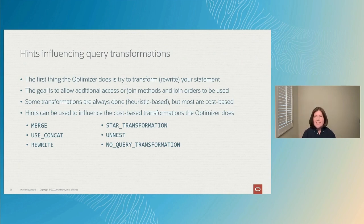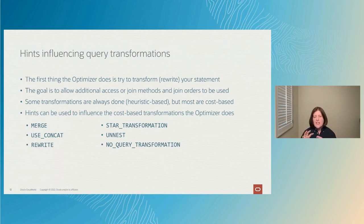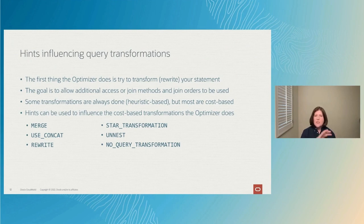Several popular transformation hints are available. Probably the most common is the MERGE hint, which tells the optimizer to take the definition of a view used in the query and insert that full definition into the outer query to optimize it as a whole — rather than executing the view definition separately to get a result set and then joining that to the other tables. We'll look at some of these other transformation hints in more detail later in the presentation.